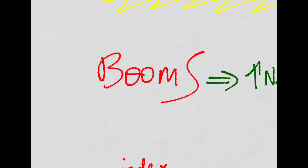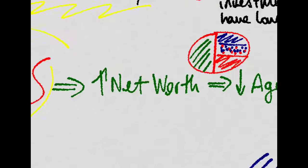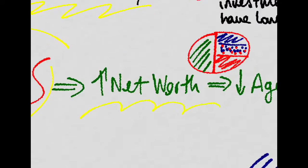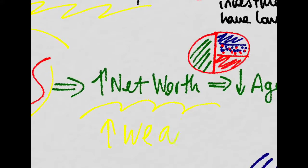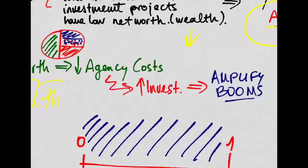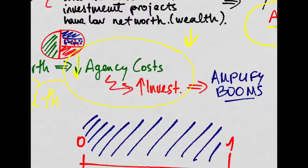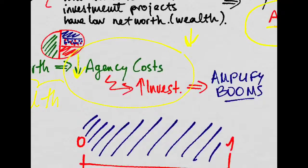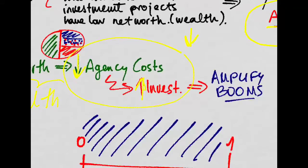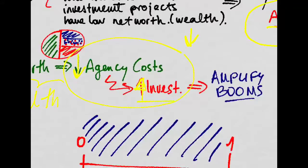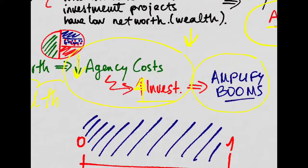But this also means that when there are booms, the net worth of the entrepreneurs, their wealth, is increasing. So, they're able to put more of their own capital into their projects. So, they have to borrow less, and the agency costs of monitoring then go down, and thus, investment projects undertaken overall go up, amplifying the effects of the booms.